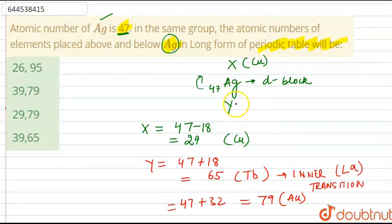So the element present below this silver, it is Au with atomic number 79. So that means, the correct option we have is option number C, that is 29 and 79. And this is the answer to this question.